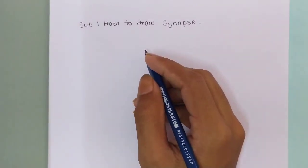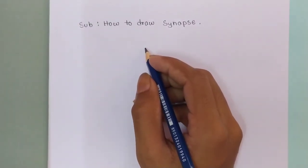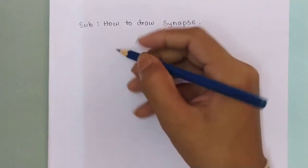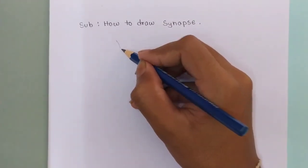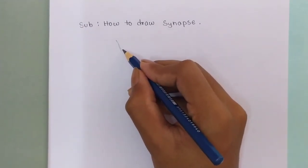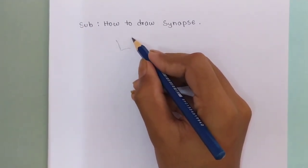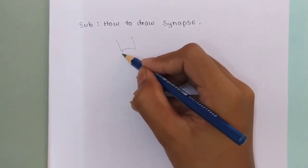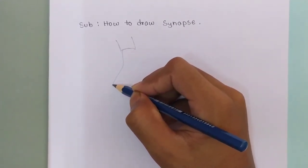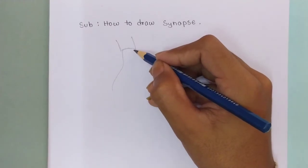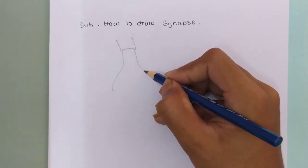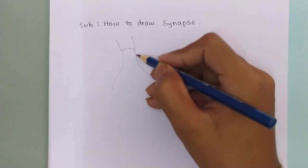Hello guys, this is Anup Kumar and today I am going to show you how to draw synapse. So let's begin. At first guys we will draw the axon in this way. It looks like a bulb so let's draw the bulb shape.